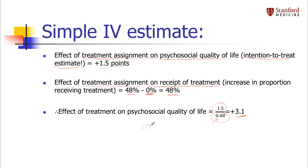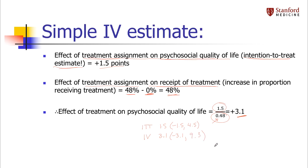In this study, the intention-to-treat estimate was 1.5 with a confidence interval of negative 1.5 to positive 4.5. Compare that to the IV estimate: the effect size was 3.1 but the confidence interval was about twice as wide, going from negative 3.1 to positive 9.3. So that reduction in precision is clearly visible in the confidence interval.